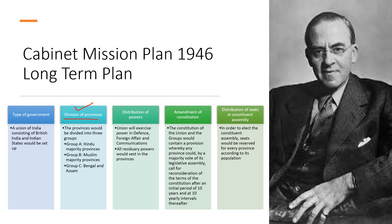Regarding the distribution of power, the Union would exercise power in defense, foreign affairs, and communications, while all residuary powers were given to the provinces. Regarding the amendment of the constitution, the constitution of the Union and the groups would contain a provision whereby any province could, by a majority vote of its legislative assembly, call for reconsideration of the terms of the constitution after an initial period of 10 years and at 10-yearly intervals thereafter.